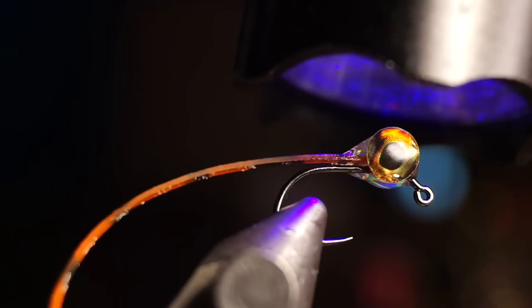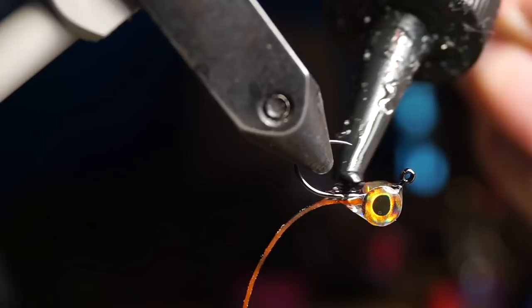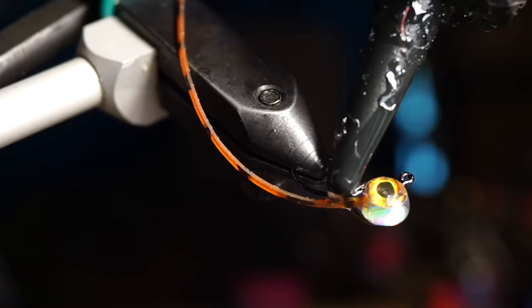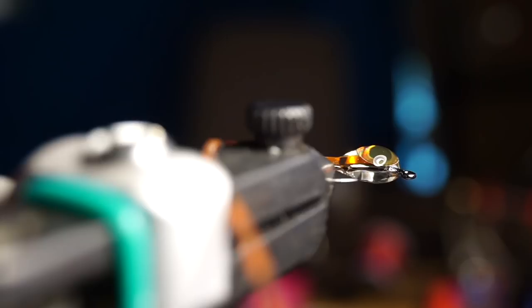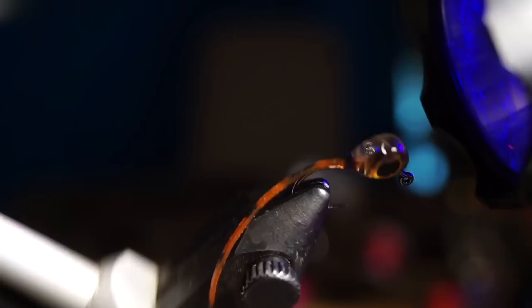Now to build the body, I like using the flex formula, because it will give the body a little give, which not only feels better to the fish when biting, but it also helps keep this more durable. So just coat the entire body with flex, and it helps to spin the fly around to ensure that it's evenly coated on the fly, and not bunching up on one side or the other. Cure this into place while spinning the fly.